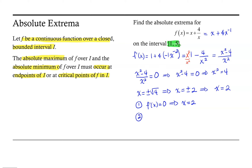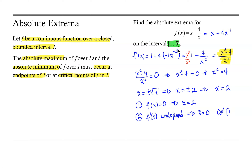We have one source of critical numbers from setting the derivative equal to 0, and from that source the only critical number we're interested in is x equals 2. Now we do have a second source for critical numbers. If we look at our derivative function, x squared minus 4 over x squared, there is only one value of x for which this derivative is undefined, and that is x equals 0. However, the interval we're interested in is the interval from 1 to 5, and x equals 0 does not lie in that interval. So we can disregard this critical point.